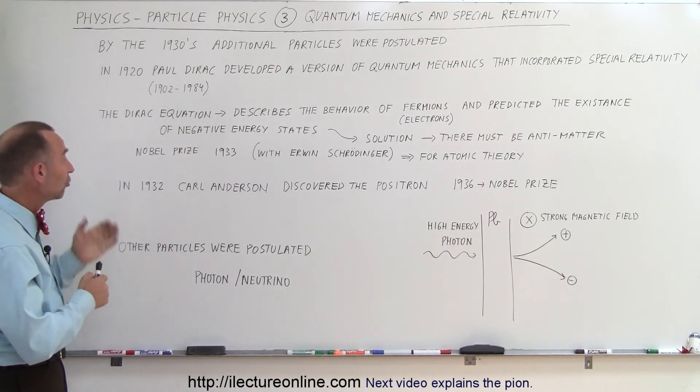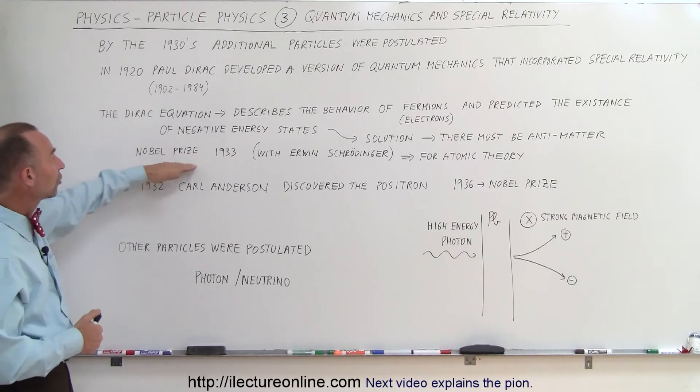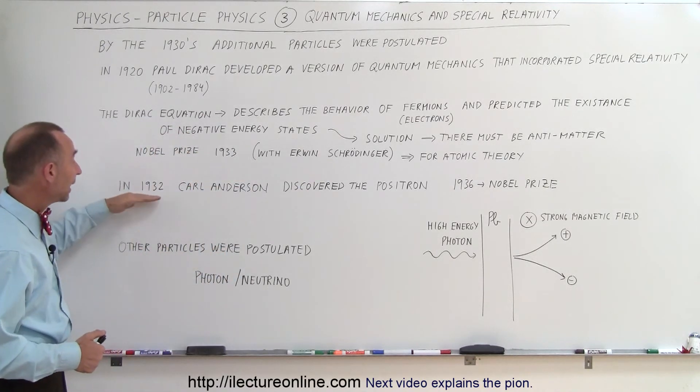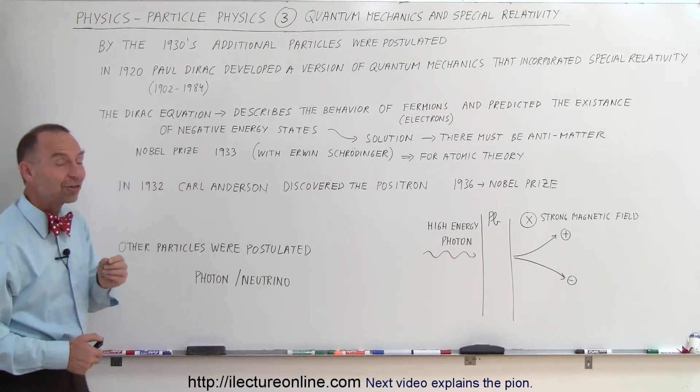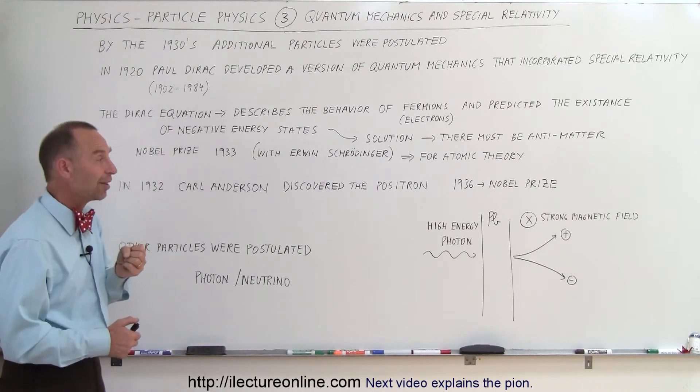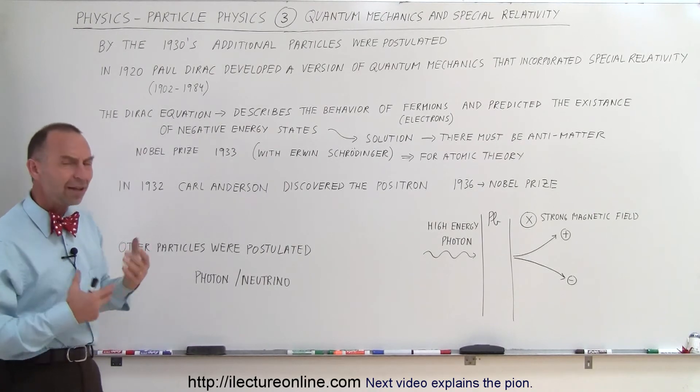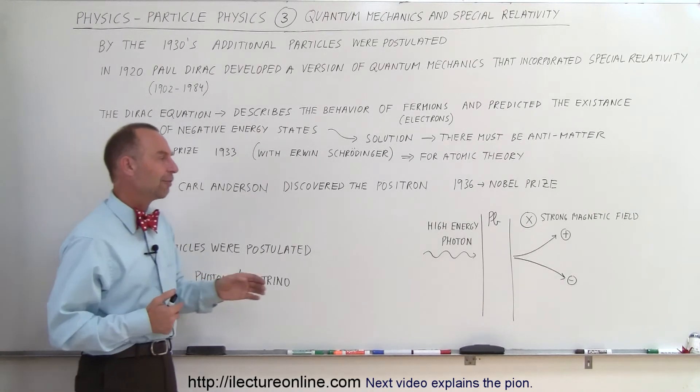Between Schrödinger and Dirac they shared the Nobel Prize in physics for atomic theory in 1933. In 1932 Carl Anderson actually discovered the positron. In 1936 he received the Nobel Prize for that. How did he discover that? A very clever event.